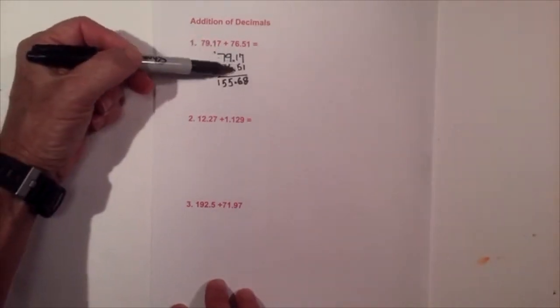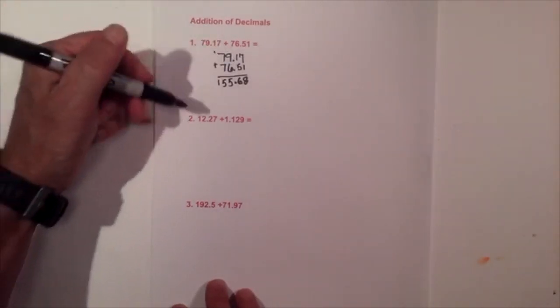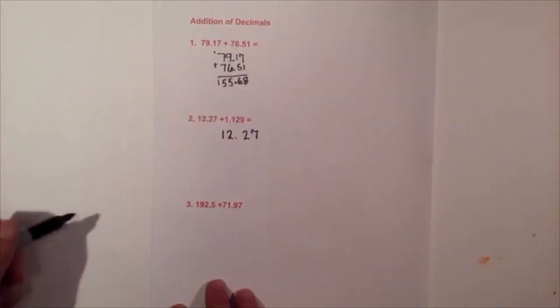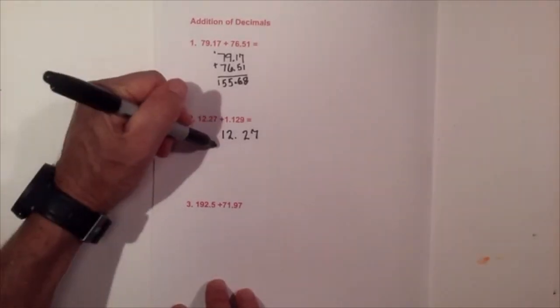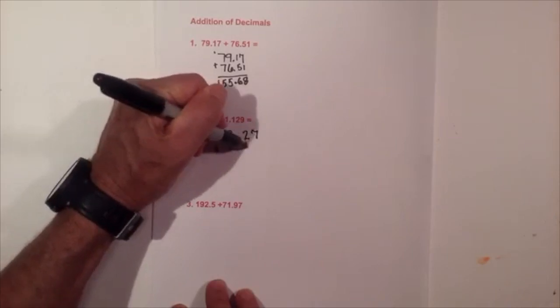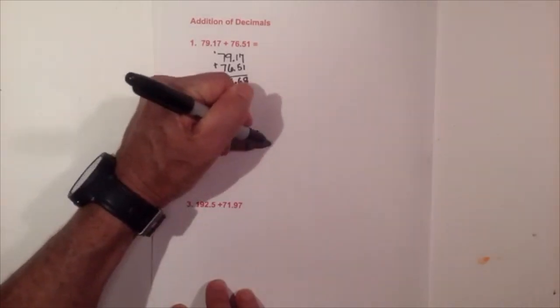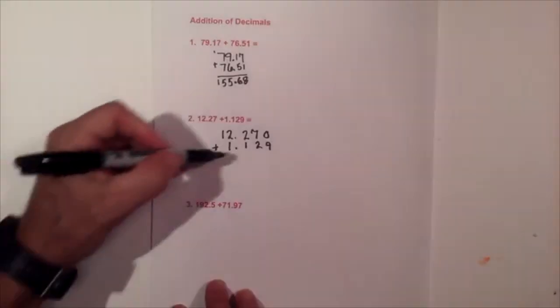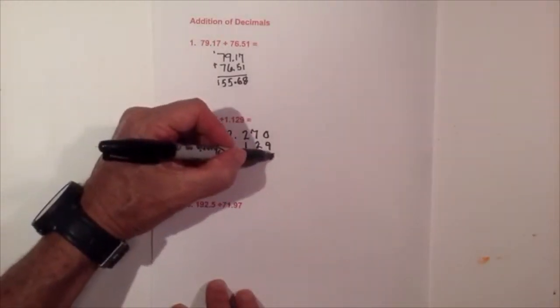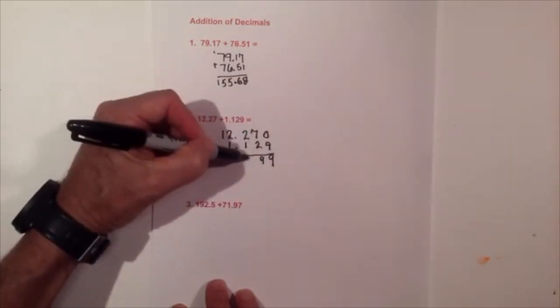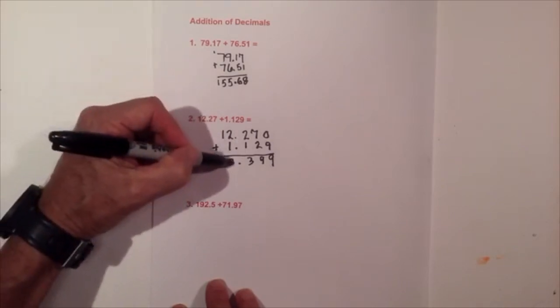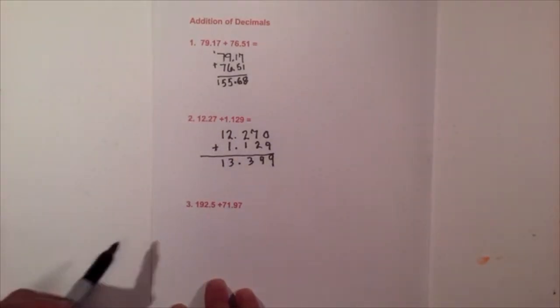The key is the decimals are lined up properly. Now on this next one, we have 12.27 plus 1.129. I'm going to put the 1 here then the decimal. I can add a 0 to 12.27 and now I just add normally. 9, 9, 3, make sure I bring down the decimal and then 3 and 1, so it is 13.399.